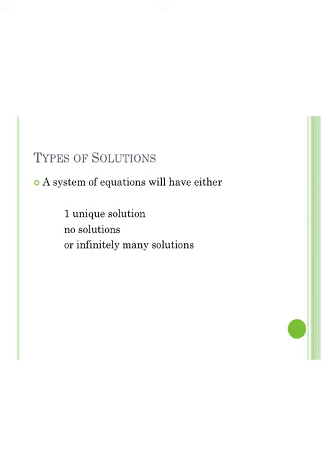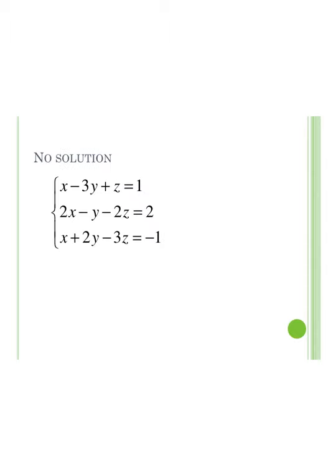Just like the last section, we have three different types of solutions. We could get a unique solution — an actual answer for x, y, and z — which is what we saw in the last two examples. We could have no solution, where we get something like 0 equals 5, which is false. Or we could have infinitely many solutions, where we get something like 0 equals 0. In the next example, we explore what it looks like to have no solution.